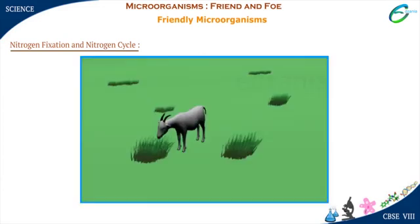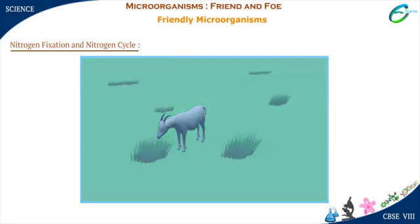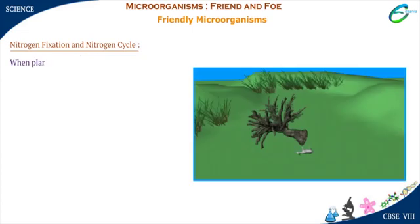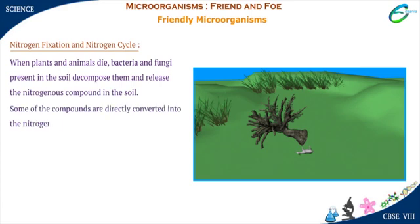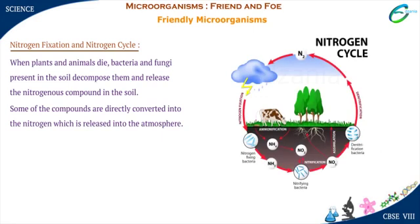Animals feeding on plants directly or indirectly get these proteins and other compounds containing nitrogen. When plants and animals die, bacteria and fungi present in the soil decompose them and release nitrogenous compounds into the soil. Some of these compounds are directly converted into nitrogen, which is released into the atmosphere. Hence, the percentage of nitrogen is always maintained in the atmosphere.